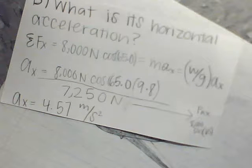What is its horizontal acceleration? In the X direction, the sum of all forces equals 8,000 newtons cosine of 65.0, which is equal to mass times acceleration in the X direction, which is equal to the weight of the plane divided by gravity times the acceleration in the X.